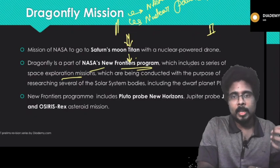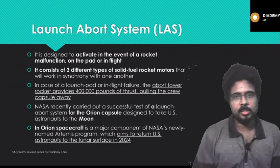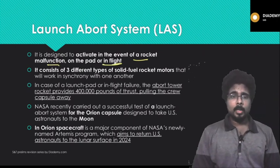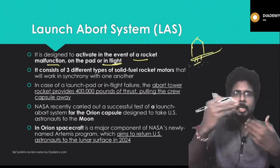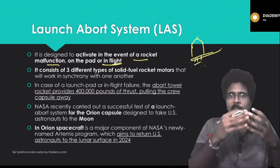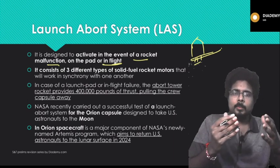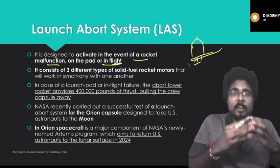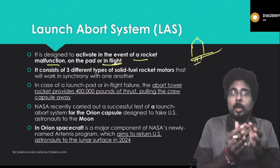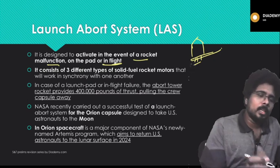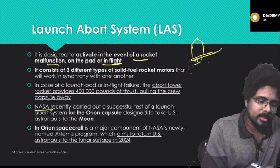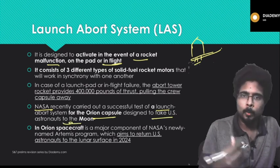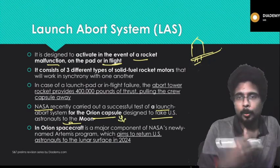The Launch Abort System is designed to activate in the event of a rocket malfunction on the launch pad or in flight. When people are traveling on interplanetary expeditions, the system must be fail-proof. NASA recently carried out a successful test of a Launch Abort System from the Orion capsule, which is designed to take US astronauts to the moon.